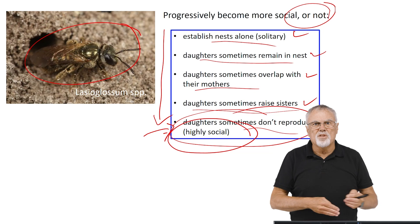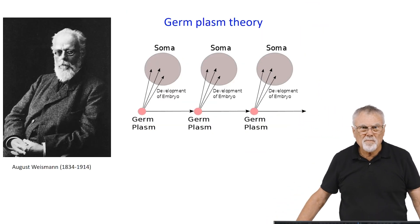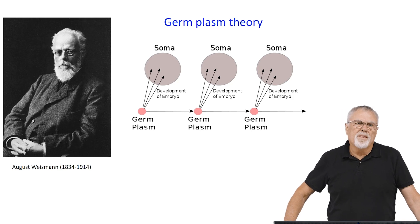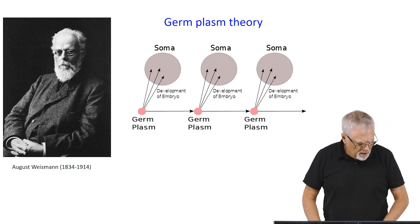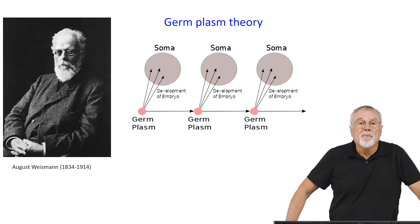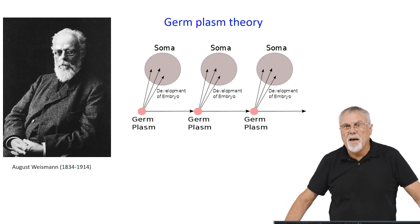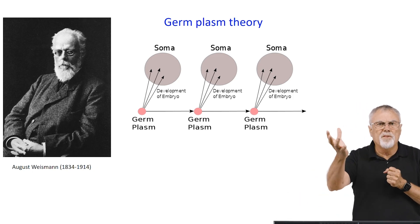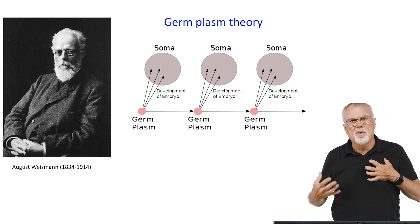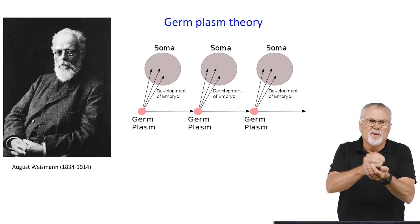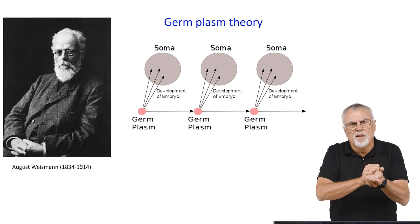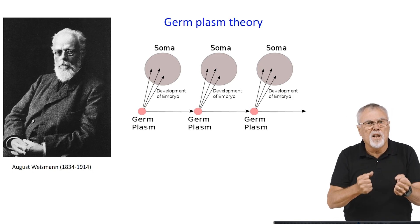Another theory that greatly influenced William Morton Wheeler and becomes important in thinking about social insects as superorganisms is the germplasm theory of August Weismann, another German developmental biologist. Weismann proposed that the germ line during development gets sequestered early on and separated from the soma. The soma are the other tissues in your body other than your germ tissue; the germ line is the tissues that give rise to sperm produced by males and eggs produced by females. The germ line is sequestered early in development — and that's a fact, it's true.